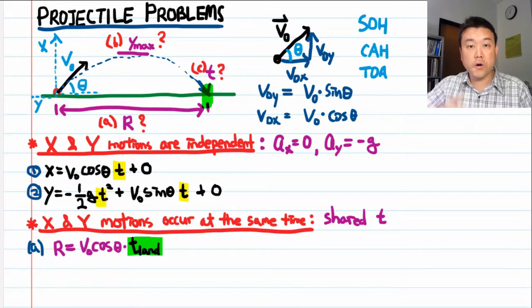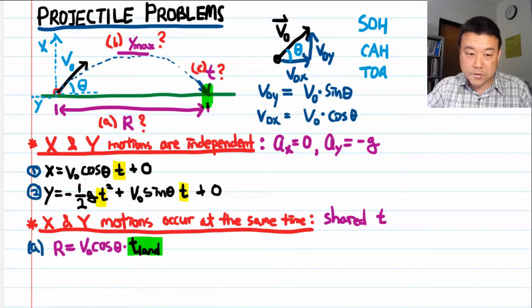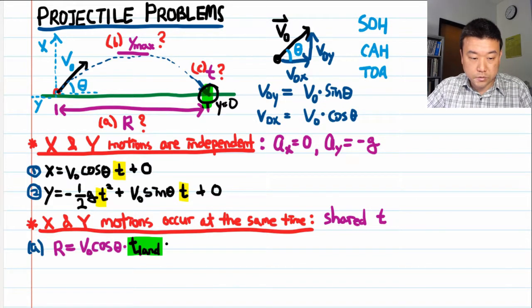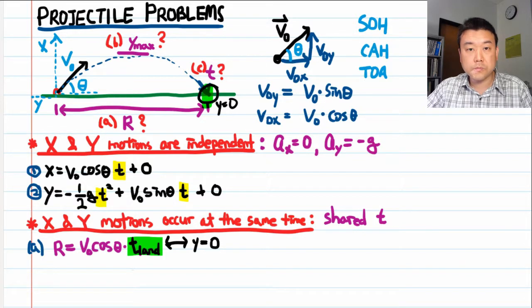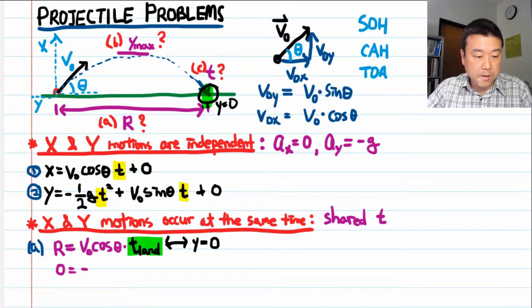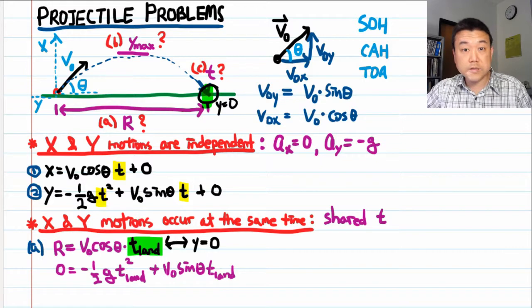So this is where it's important to remember that x and y motions occur at the same time. You can look at the vertical component of motion to see what information there is that you can use. And I hope as you look at this diagram that you realized when the ball lands, the y position is equal to zero. So that's the connection we are going to use. At time when the projectile lands, the y position is equal to zero. So let's write out that equation. So at the landing time t, the y position is equal to zero. And that's equal to minus one half g t land squared plus V naught sine theta t land.